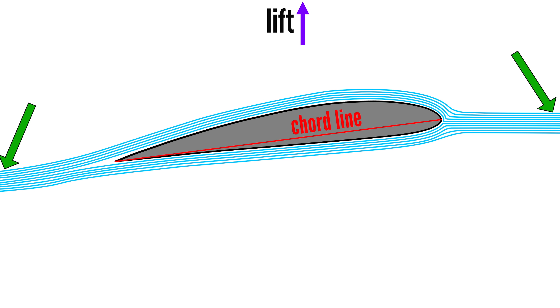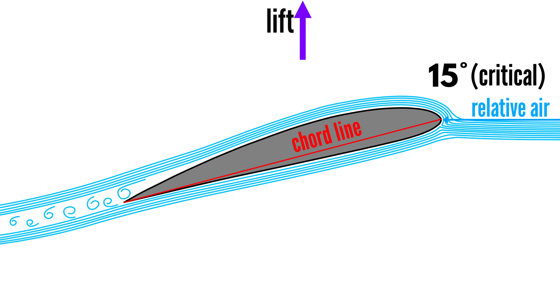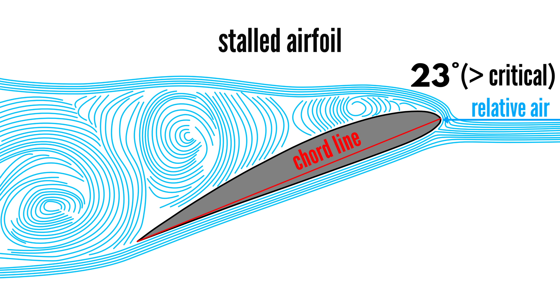However, this holds true only up to the critical angle of attack. Exceeding it stalls the airfoil, causing the airflow over the top to separate from the upper surface, resulting in turbulent flow and a significant loss of lift or thrust.